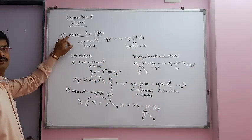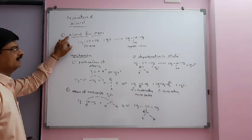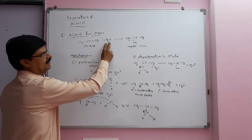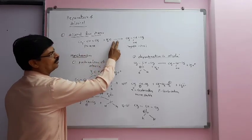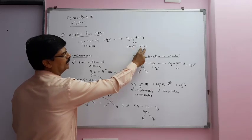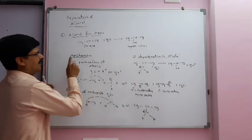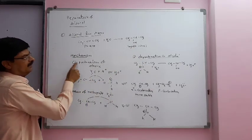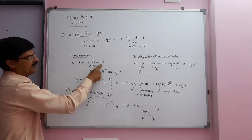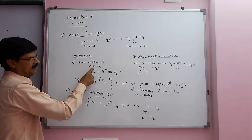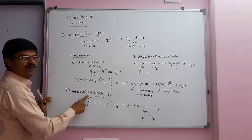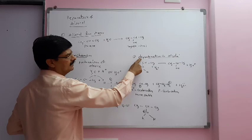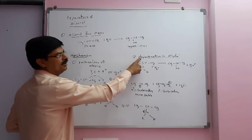Once more, summarizing alcohol from alkene: propene plus water in the presence of acid gives propan-2-ol. The mechanism involves: first, protonation of alkene; then, attack of nucleophile; and third, deprotonation to form alcohol.